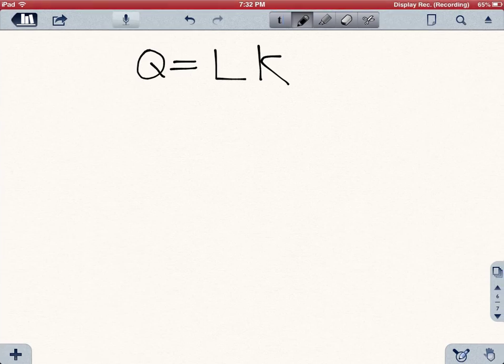So here's a specific form of a production function. Q is going to be equal to L raised to some exponent times K raised to some exponent. This is actually called the Cobb-Douglas production function.